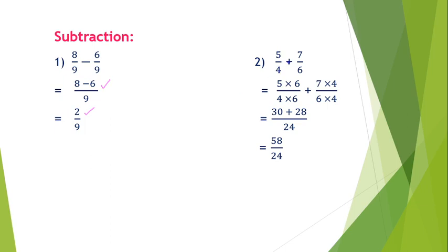Second subtraction example: 5 upon 4 minus 7 upon 6. The denominators are unequal, so we make them equal. Multiply 6 to the left side both up and down, and multiply 4 to the right side both up and down. 5×6 gives 30, 7×4 gives 28, and 6×4 gives 24. Taking 24 as common, 30 minus 28 gives 2 upon 24.